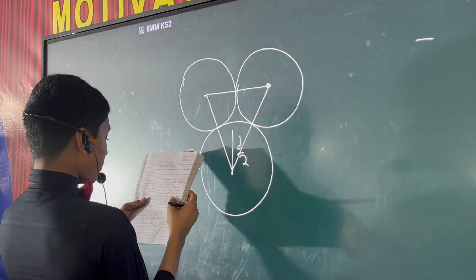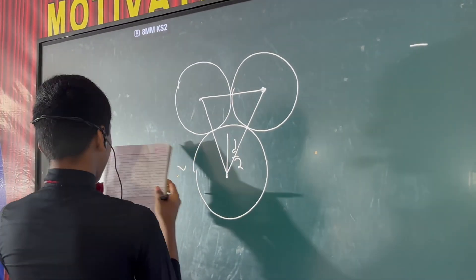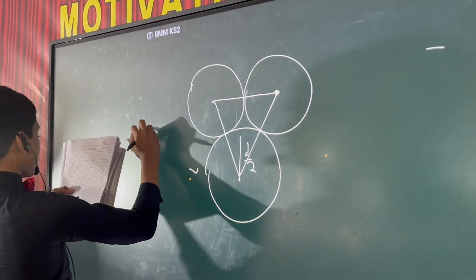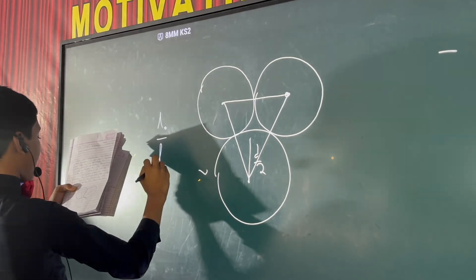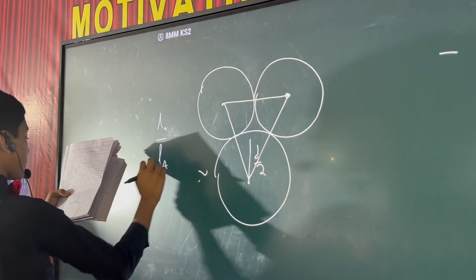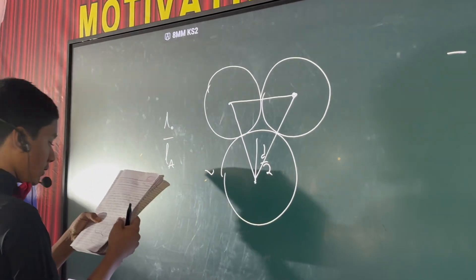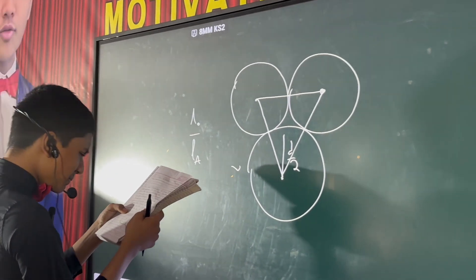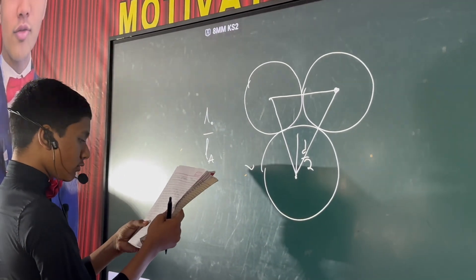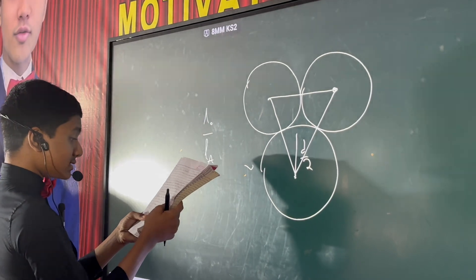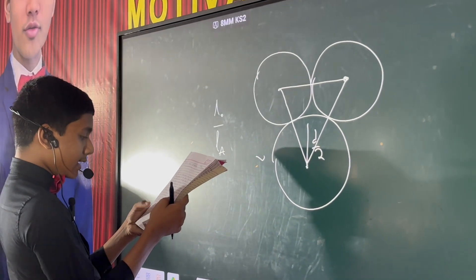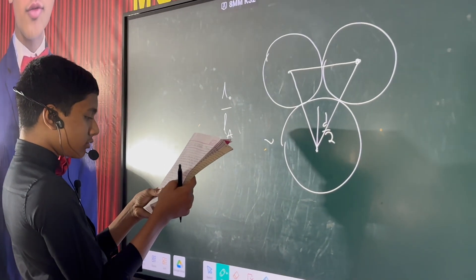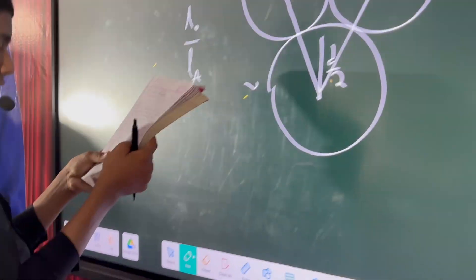The ratio L₀/L_A of the moment of inertia about an axis passing through the centroid, and about the center of any of the spheres, L_A, and perpendicular to the plane of the triangle.